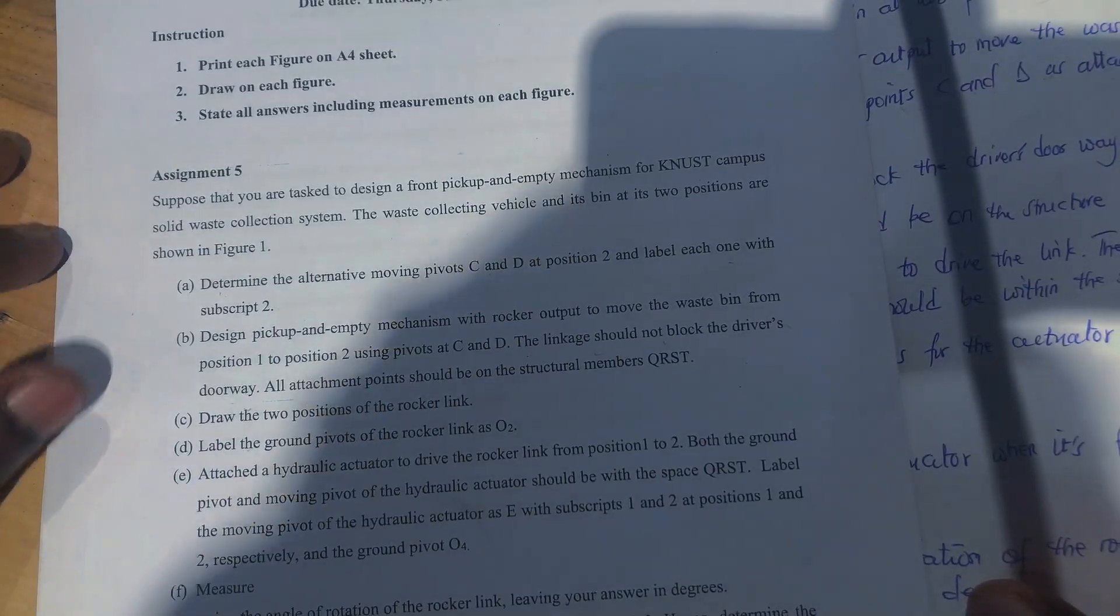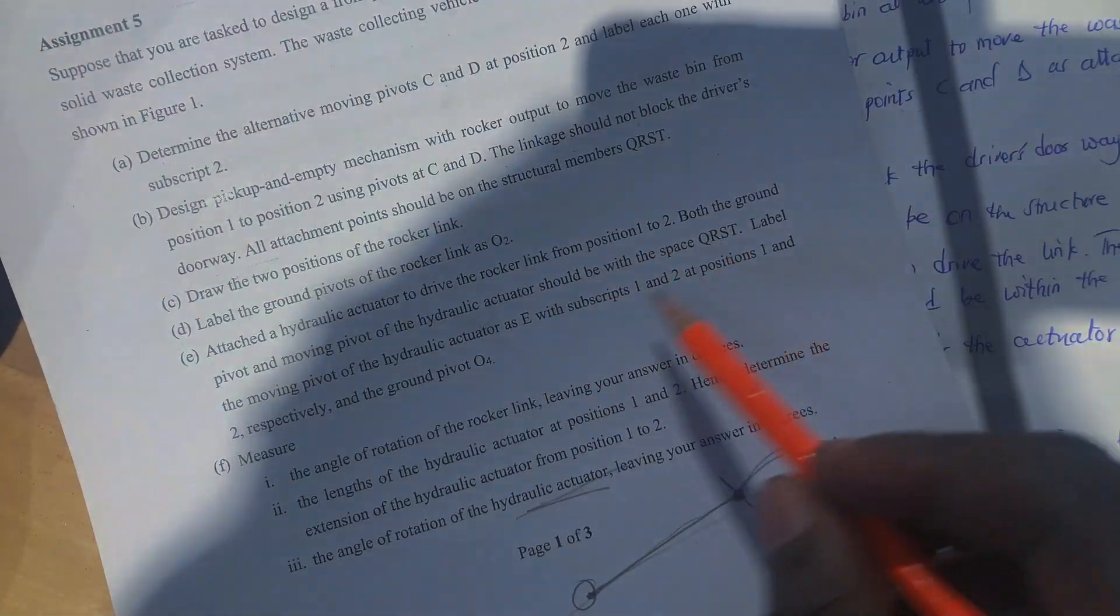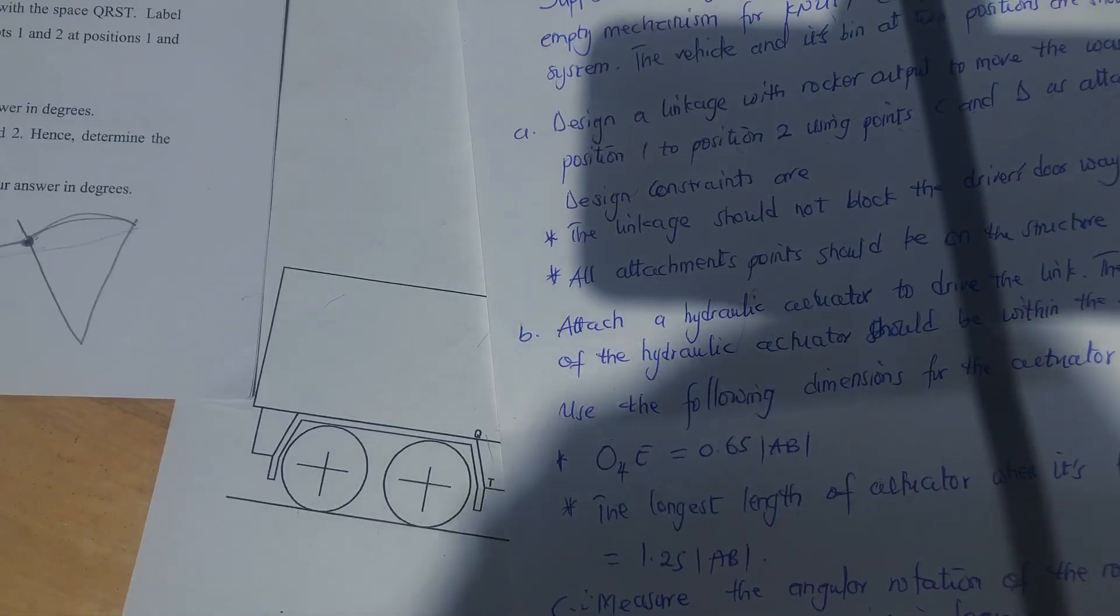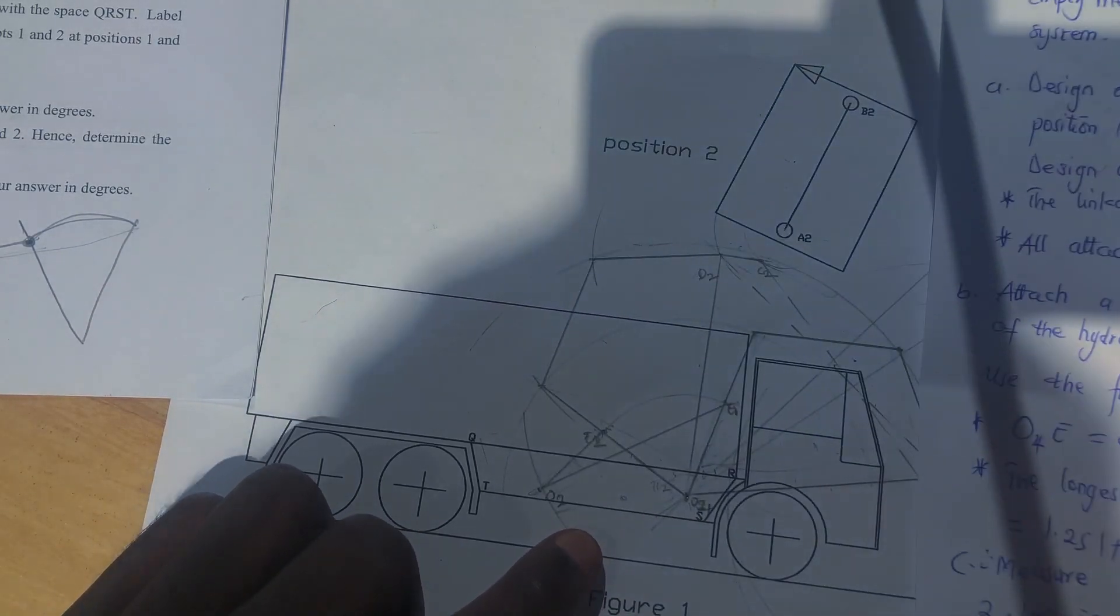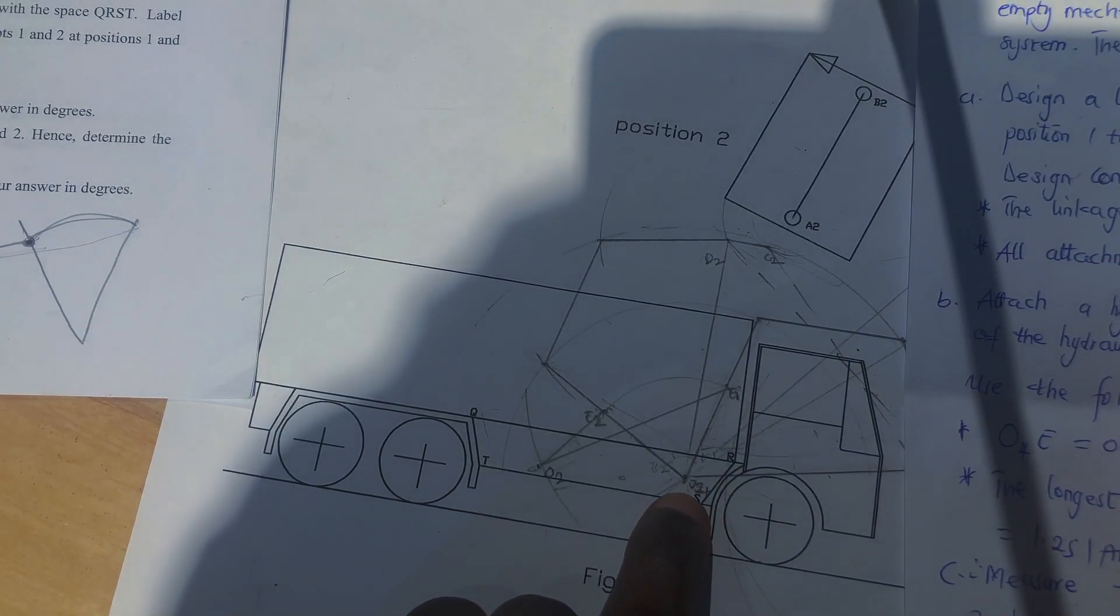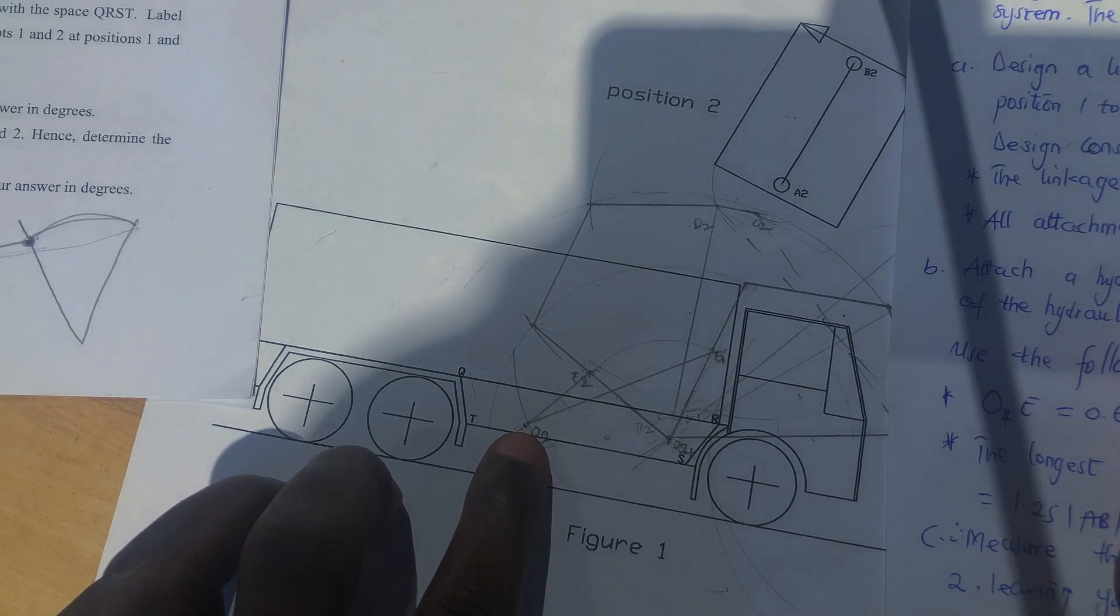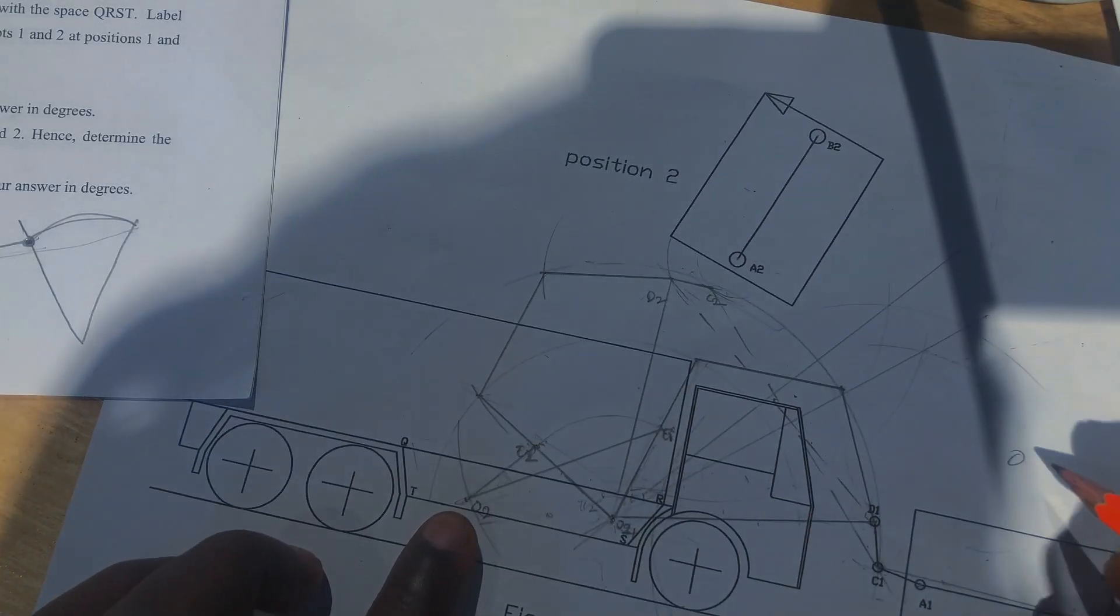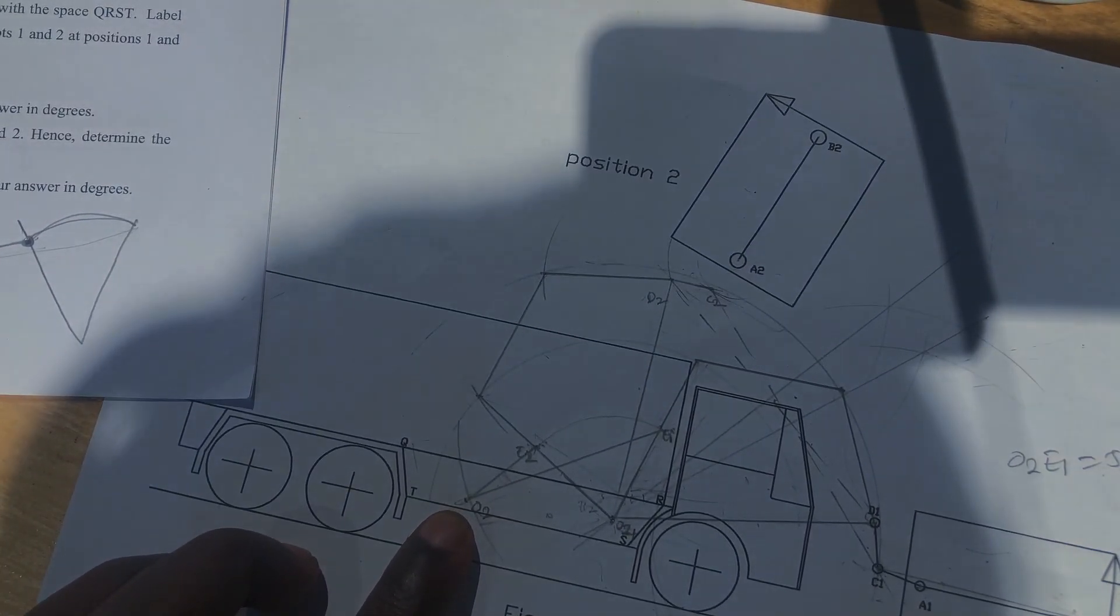I think the same assignment question. With this one there were no specifications or constraints with regards to where the actuator should be, but with this they were. And then you will see that the fixed pivot for the couplers should be labeled as O4, and then this was O2. So we measure O2U1 which is five centimeters.